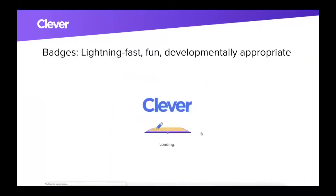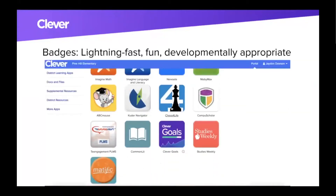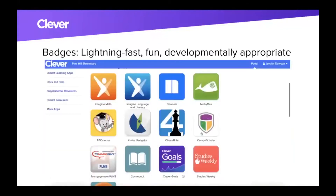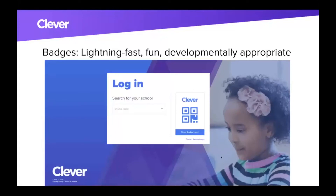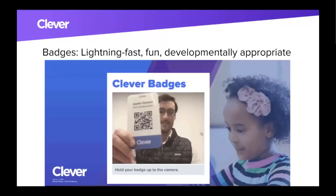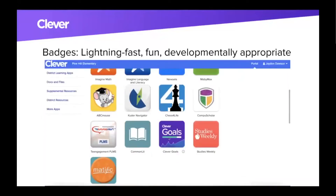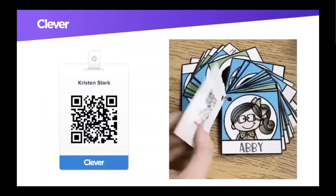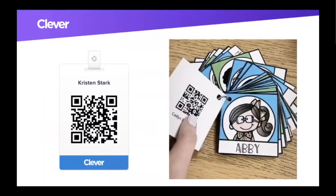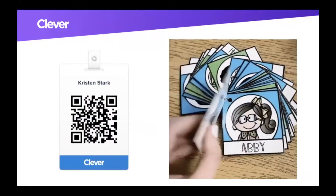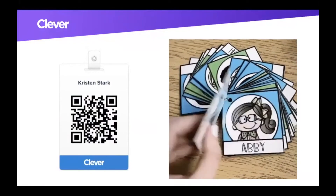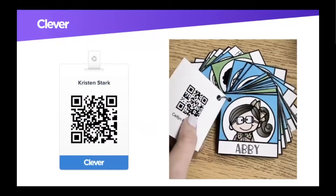We also offer Clever badges. This GIF moves really fast, but realistically this is how fast it is to get students into Clever using a badge — they just hold up their specific Clever badge and are immediately logged in, then click on their application. If you have badges enabled for your class, when you log in to Clever you're able to download a class set. Matt, if you can unmute yourself, I'd love to have you talk about your badge system in your classroom, which was really inspiring.